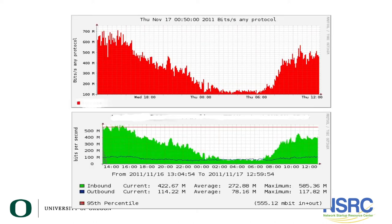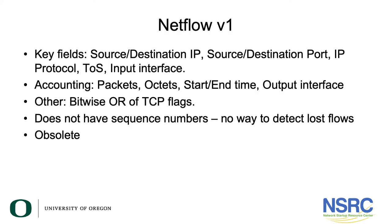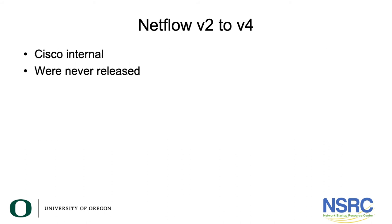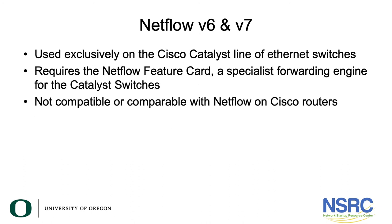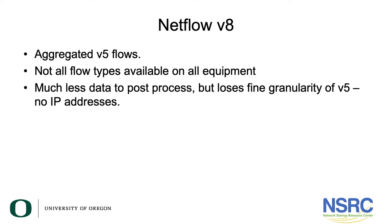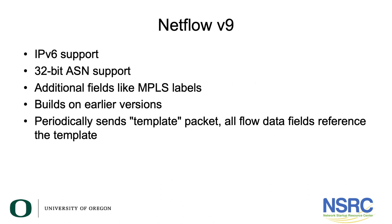There's also a quick summary of the different Cisco netflow versions, from netflow version 1 through to version 5 — which was commonly used when first released — netflow version 6, which found its way on the Cisco Catalyst line of chassis-based Ethernet switches, and then netflow version 9, the current version, which supports IPv6, 32-bit AS numbers for BGP, and additional fields like MPLS labels.